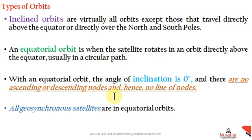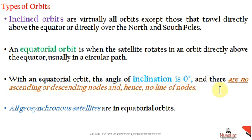In an equatorial orbit, the equatorial plane contains an ascending node and a descending node, which can be connected by the line of nodes. An equatorial orbit has an inclination of zero, so there are no ascending or descending nodes and hence no line of nodes. Geosynchronous satellites use equatorial orbits.